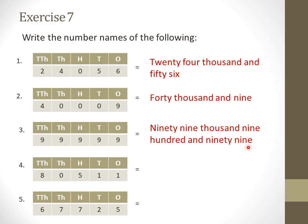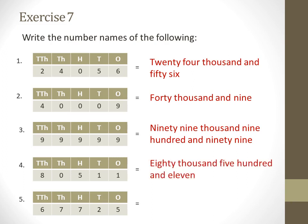Next we have 8, 0, 5, 1, 1. Starting from the thousands period: under the thousands period we have 8 and 0, so 80 thousands — that is 80,000. Under the hundreds section we have 5, so 500. Under tens we have 1, and under ones also 1, making 11. So the answer is eighty thousand five hundred and eleven — 80,511.